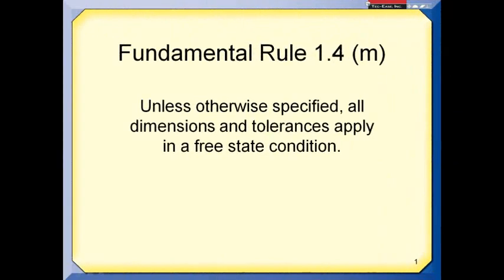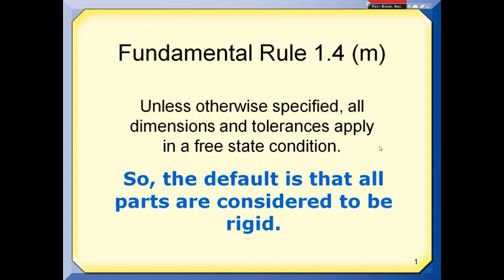Here's an example of a fundamental rule and how it may be overridden. It is Fundamental Rule 1.4M, and it tells us that unless otherwise specified, all dimensions and tolerances apply in a free state condition. In other words, the default is that the parts are considered to be rigid. You're not allowed to distort the part in any way during verification. You have to look at the drawing and see if it's been specified otherwise. If not, it's considered to be a rigid part.